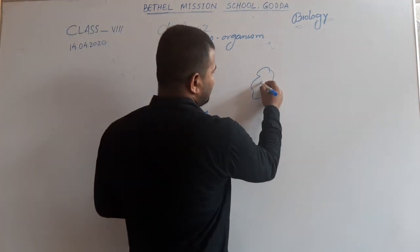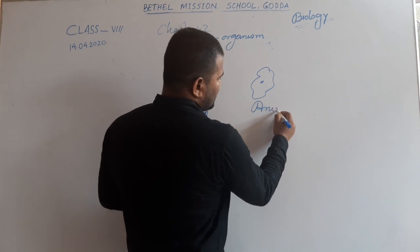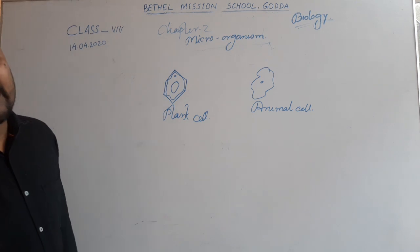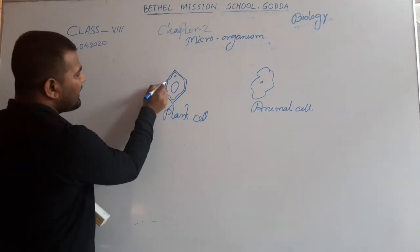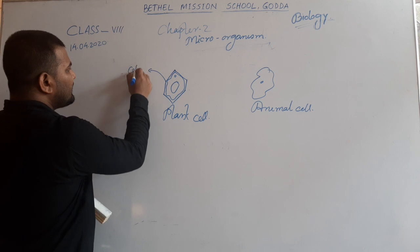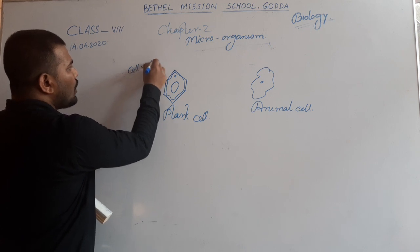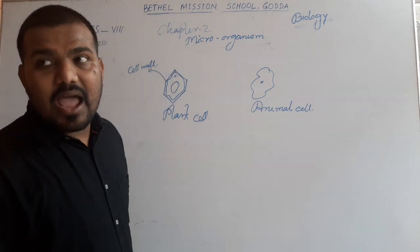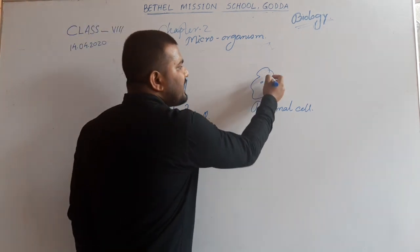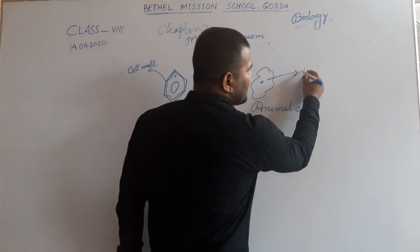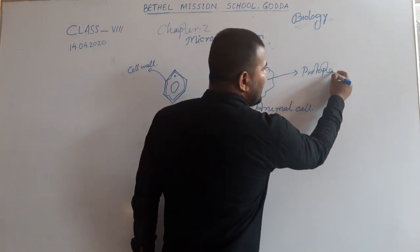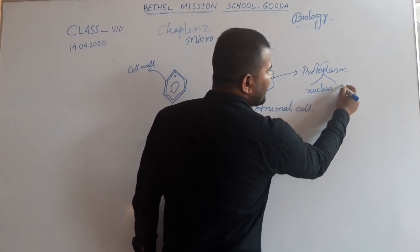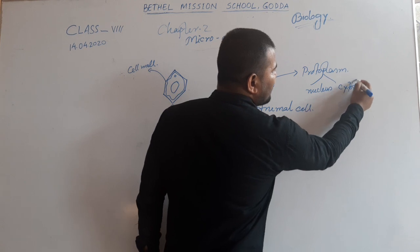This is an animal cell. In the case of the plant cell, plant cells are bounded by a thick, non-living outer covering known as a cell wall, whereas in animal cells, the cell wall is absent. The innermost portion of the cell is known as protoplasm. Generally, protoplasm is the mixture of nucleus and cytoplasm.